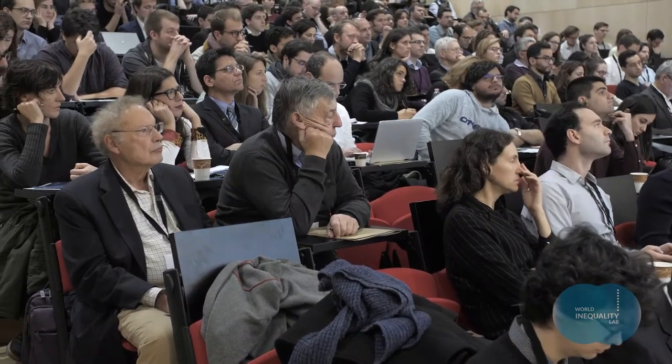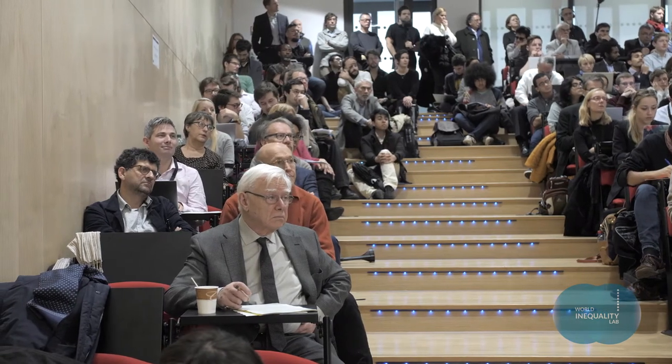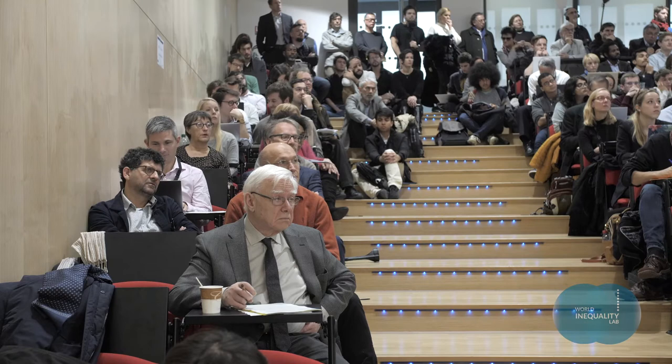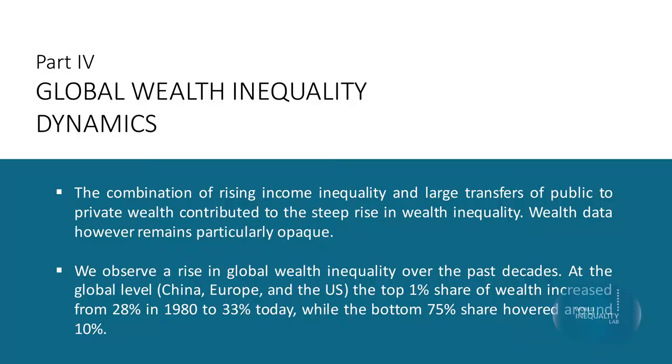There are indeed exceptions to this general pattern. The case of Norway is illustrative: the share of public capital in national wealth amounted to 30% in 1978 and is now close to 60%. You may say this is only due to oil in Norway. But we want to say no — it's not only due to oil, because a country like Russia also has a lot of subsoil assets and did not invest them in the same way as Norway did. In Russia, the privatization of these assets only benefited a handful of individuals. And this is what we discuss in the fourth part of the report on global wealth inequality dynamics among individuals.